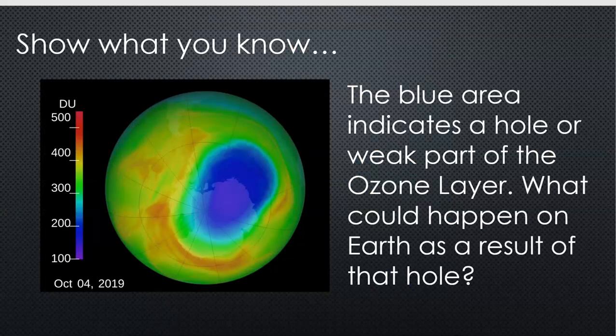Now that being said, here's another model. Now that blue area shows a part of our atmosphere that's a hole or a weak area in our ozone layer. What do you think could happen to Earth as a result of that hole? Show what you know. Good luck!